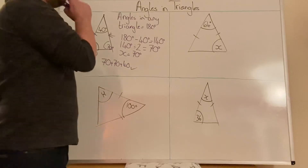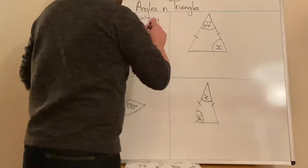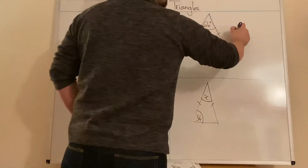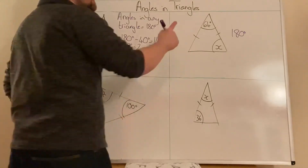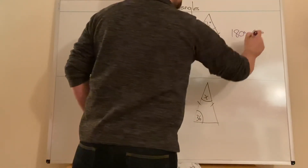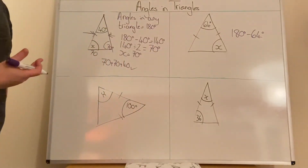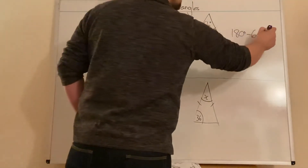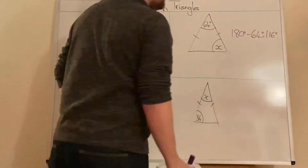Now look at this next one. We're going to start off in exactly the same way — we know that all angles add up to 180 degrees, so we write that down. Then we're going to take away the angle we're already given. We're given the top one, so we take it away to figure out what's left: 180 minus 64.